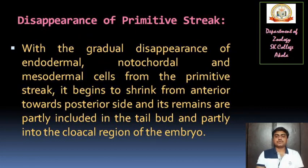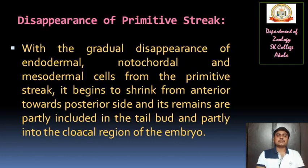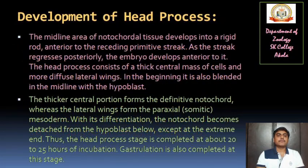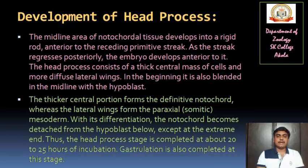Disappearance of the primitive streak: with the gradual disappearance of the endodermal, notochordal, and mesodermal cells from the primitive streak, it begins to shrink from anterior towards the posterior side, and its remains are partly included in the tail bud and partly in the cloacal region of the embryo. Already we have discussed in the diagram how the head process develops, but we will see point-wise. The midline area of notochordal tissue develops into a rigid rod anterior to the receding primitive streak as the streak regresses posteriorly, and the embryo develops anterior to it.